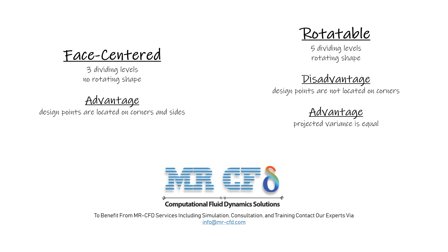The difference between face centered and rotatable models is that the face centered model has three dividing levels for design points; the location pattern of the design points does not have a rotating shape, and its advantage is that sample points are placed in all corners and all sides. The rotatable model has five levels for dividing the design points; the pattern has a rotating shape. Its weakness is that design points are not located in the corners, and its advantage is that the projected variance for points at the same distance from the central point is equal.